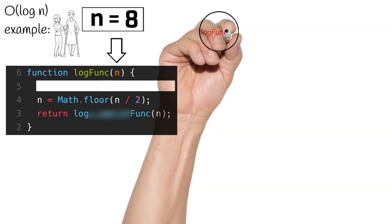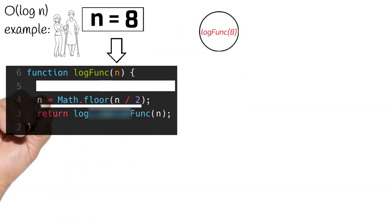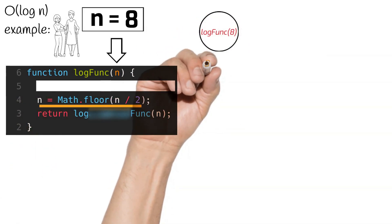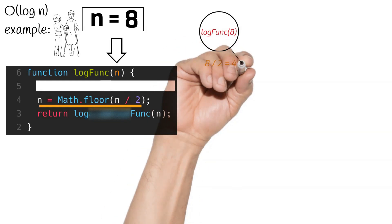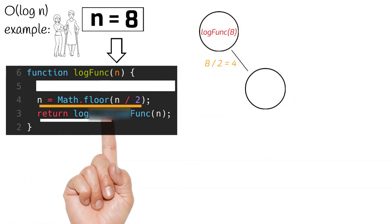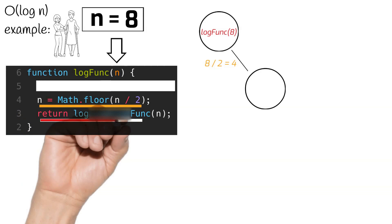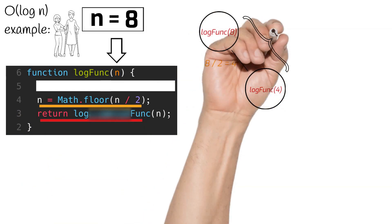So we first call the function with the value 8. This 8 is then divided by 2. The function then takes the result of the division and passes it recursively to itself as the new value for n, which in turn results in us going one level deeper.